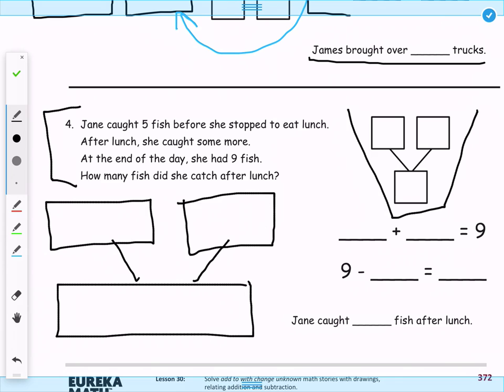So Jane caught five fish before she stopped to eat lunch. After lunch she caught some more. At the end of the day she had nine fish. How many fish did she catch after lunch? Now of course our biggest number that we see is going to be our whole, so that's right there, and then we know at least one of our parts which is right here.